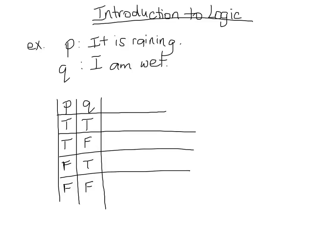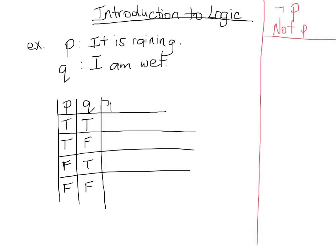Now we can start combining these statements in various ways. I'll have to introduce you to a few symbols. The first symbol I'd like to introduce is the NOT symbol. Together with the proposition it means 'not P,' which in this case means 'it is not raining.' Any time that P is true, not P will be false.